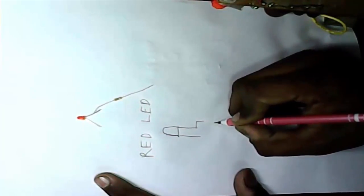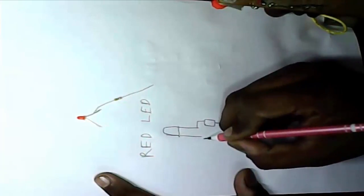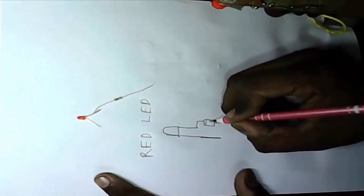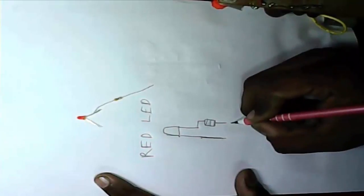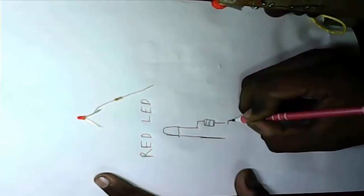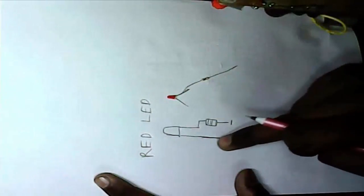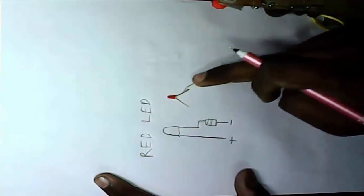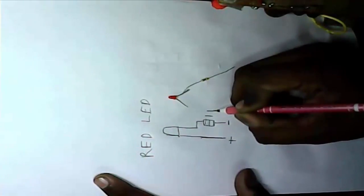This side we join our resistor. This side is minus and this side is plus. And we set. See this is plus side and this is minus side. Join to resistor. And this is 1K resistor.